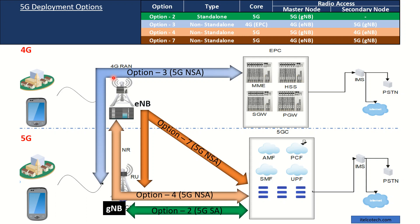At a very initial stage of deployment, Option 3 would be chosen. Option 4 is again a non-standalone option. In this case, the core has now been upgraded to 5G, but the eNodeBs are still present. The reason would again be that the coverage footprint of the 4G network is higher compared to 5G.